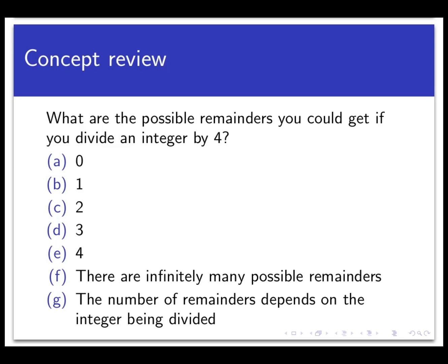So what are the possible remainders you could get if you divide any integer at all by 4? Is it 0, 1, 2, 3, 4? There are infinitely many possible remainders, or the number of remainders depends upon the number being divided? Select all the ones that apply and come back after you've made your selections.